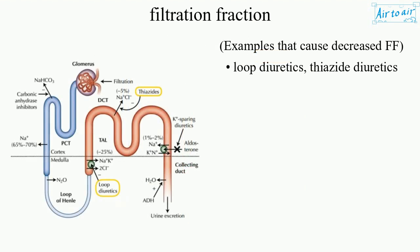Examples that cause decreased FF: loop diuretics, thiazide diuretics — afferent arteriole effects.